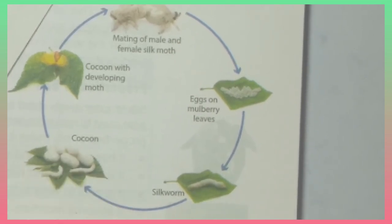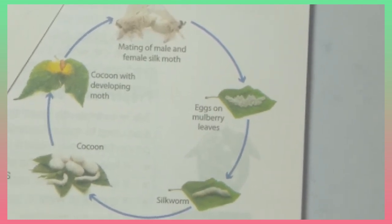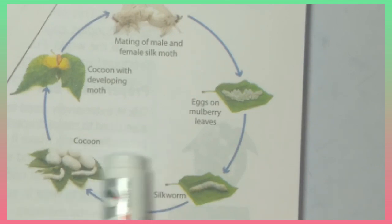The larva spins a net around itself, which later helps in the secretion of a protein. That's why silk is a natural protein fiber. This protein hardens when exposed to air. This is actual silk fiber, this net.